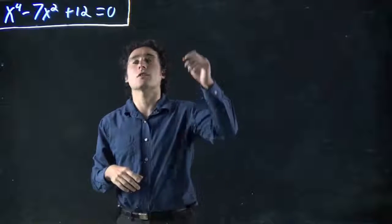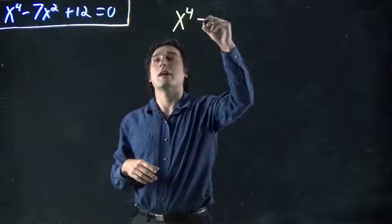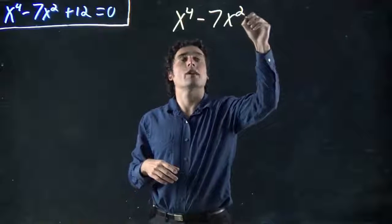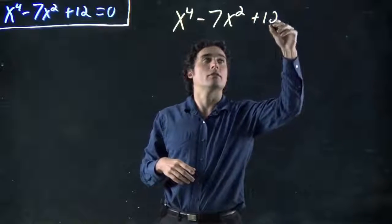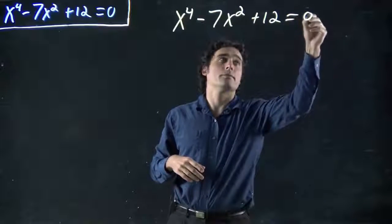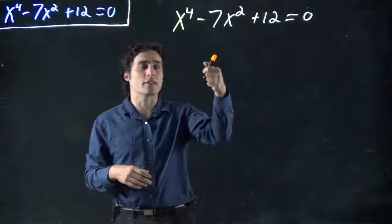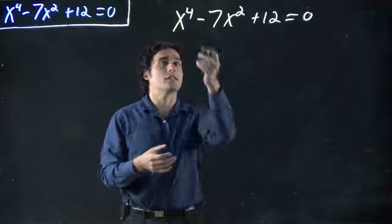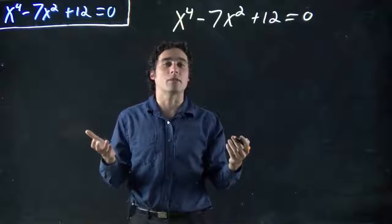So what do I mean, first things first, what do we got, x to the 4, minus 7x squared, plus 12, all equal to zero. We're going to solve for x. Again, it looks dicey, oh god, to the 4, never seen that before, what do we do?